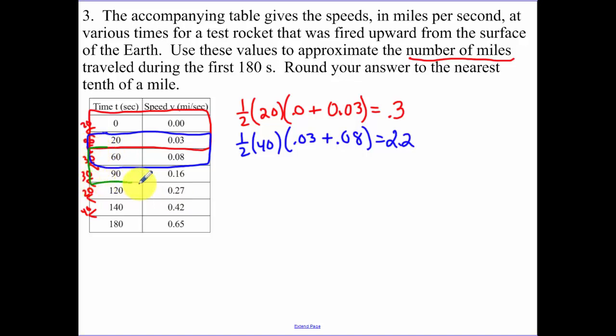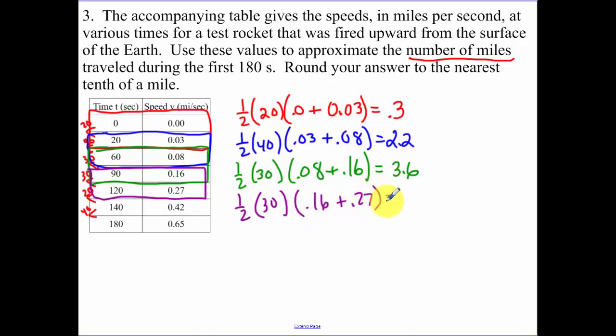The next one. The difference again is 30, base one plus base two, and I get 3.6. The next one, difference is between those two. I have 1/2, my height is going to be 30, base one is 0.16 plus 0.27, and this ends up being 6.45.